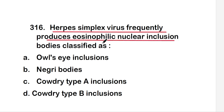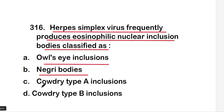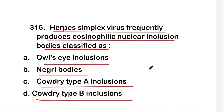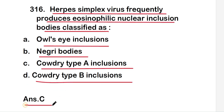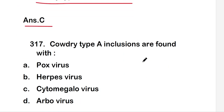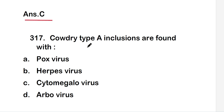The next question is: herpes simplex virus frequently produces eosinophilic nuclear inclusion bodies classified as — owl's eye inclusion, Negri bodies, Cowdry type A inclusion, or Cowdry type 2 inclusions? The right answer is option C, that is Cowdry type A inclusions. So herpes simplex virus frequently produces eosinophilic nuclear inclusion bodies classified as Cowdry type A inclusions.